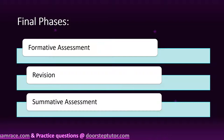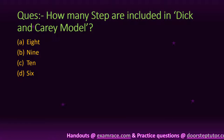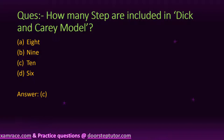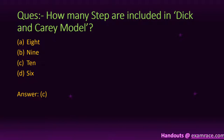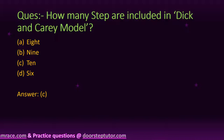Now let's look at some questions regarding the Dick and Carey model. The first question is: how many steps are included in the Dick and Carey model? The answer is 10 steps. If the question asks how many phases, the answer is 6, because the Dick and Carey model is divided into 6 phases, and each phase is further divided into parts called steps, totaling 10 steps.